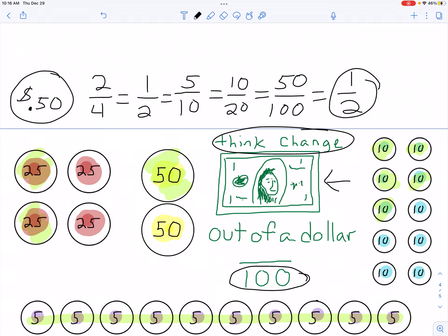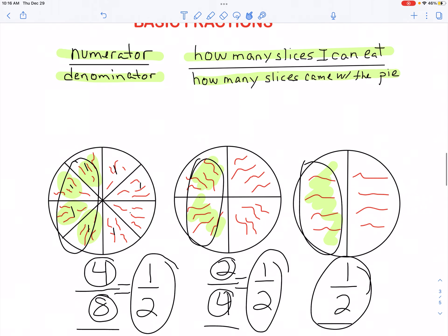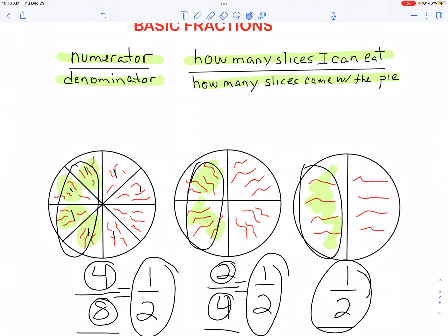They're all equivalent. So hopefully that's a good way for you to kind of simplify how you look at fractions. You can think about money or you can think about pizza. Either way, those are good thoughts. Hope that helps.